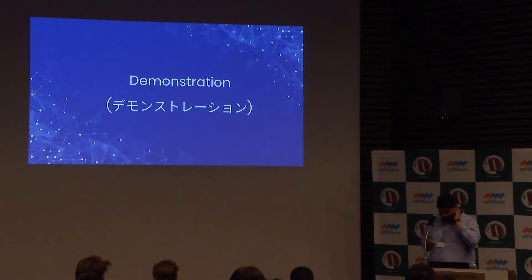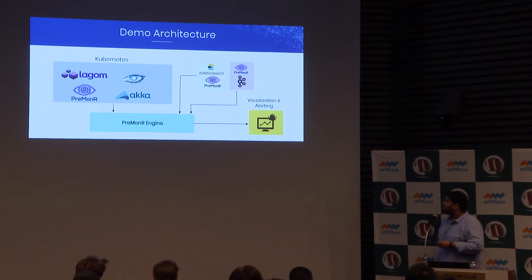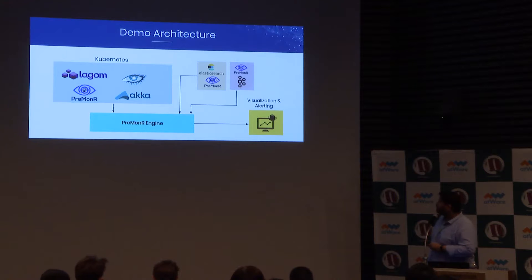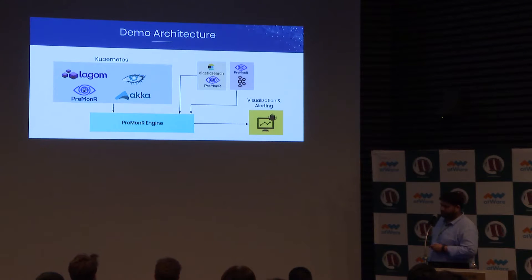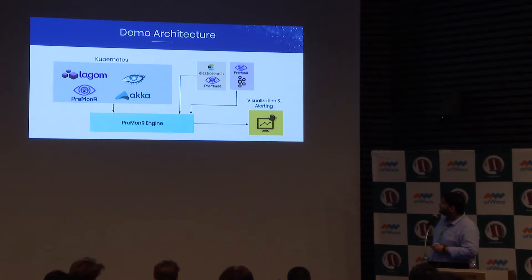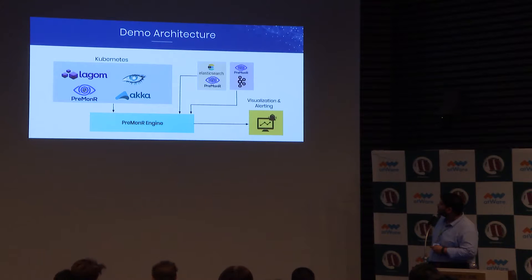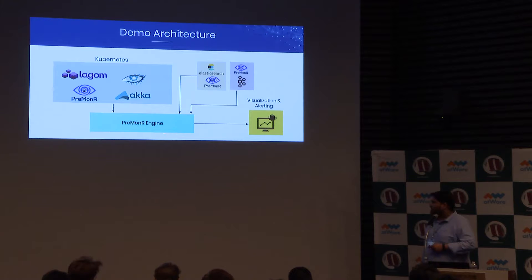Let's start with the demonstration. This is my demonstration architecture — I have a Kubernetes cluster where I have one Lagom and one Akka HTTP application running, along with a Cassandra cluster. I have a Premonar agent running over Kubernetes. On a bare metal, I have an Elasticsearch to which my Akka HTTP application is communicating, and on that bare metal I have a Premonar agent as well. Kibana is doing inter-service communication between Lagom and Akka, and then I have my Premonar engine running.